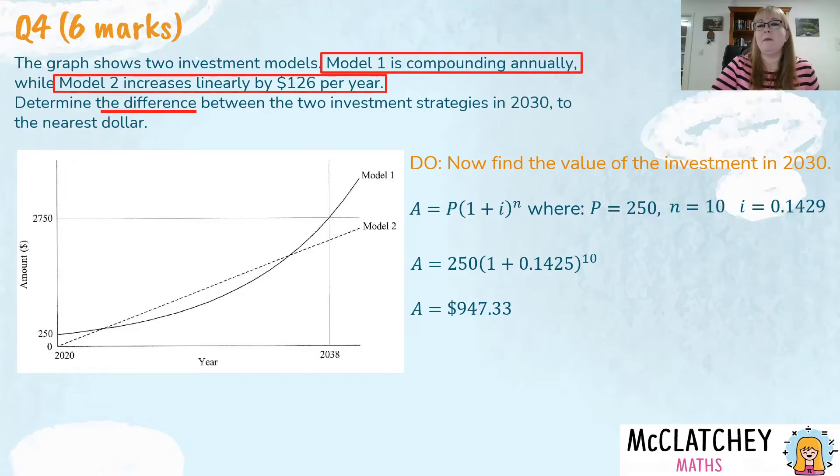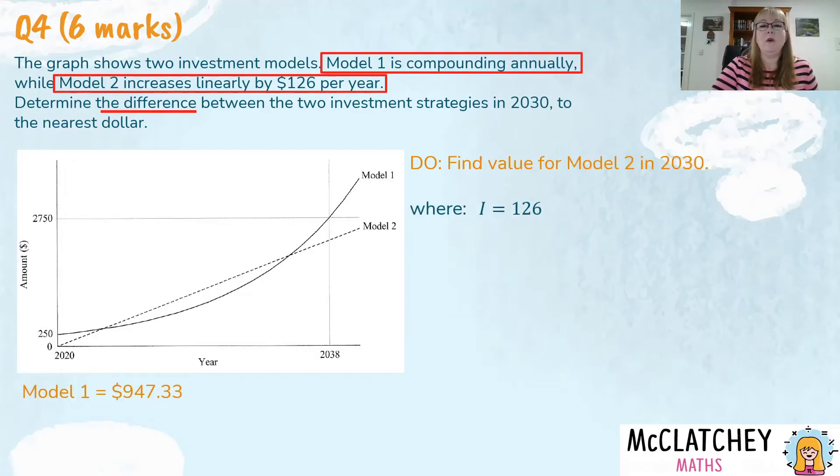Okay, now we need to do something with model two. So we actually know that the interest that's paid is $126 per year. And this particular investment is starting at zero. That's the principal. So if you try and use the simple interest formula here, you'll notice that if you start with a value of zero, you're going to be basically times in the n and the i value by zero, you're going to get nothing as an amount at the end. So that's not going to make a lot of sense. So we're not going to use the simple interest formula.